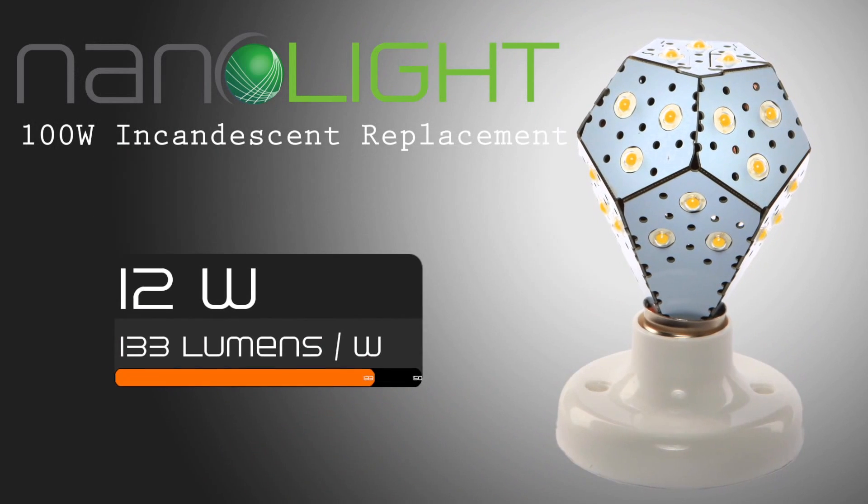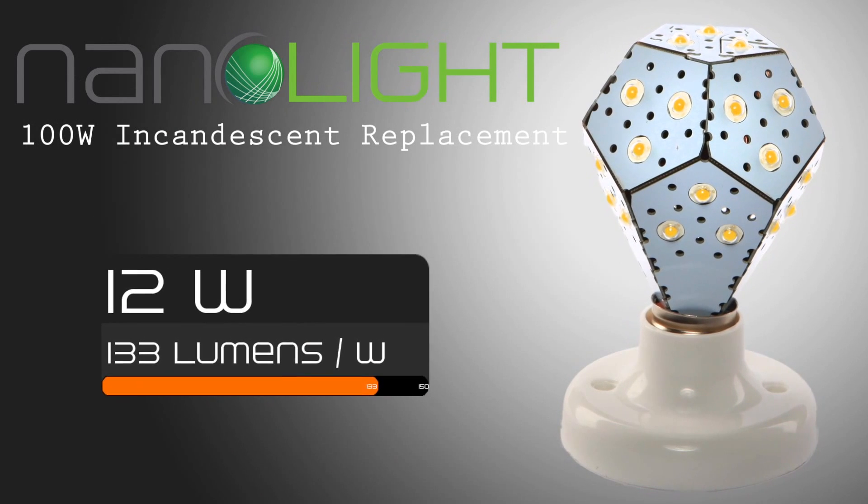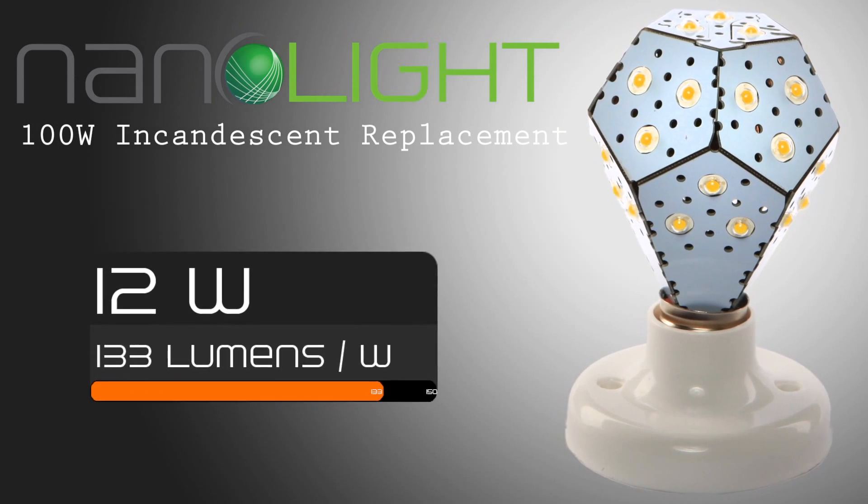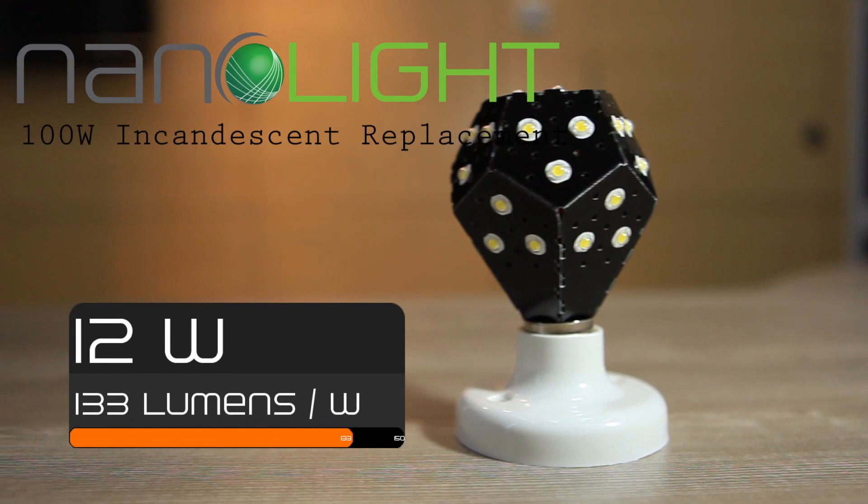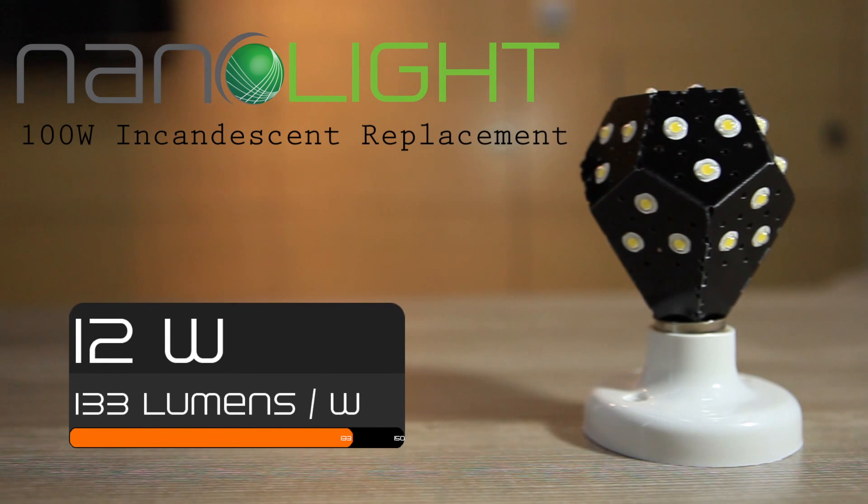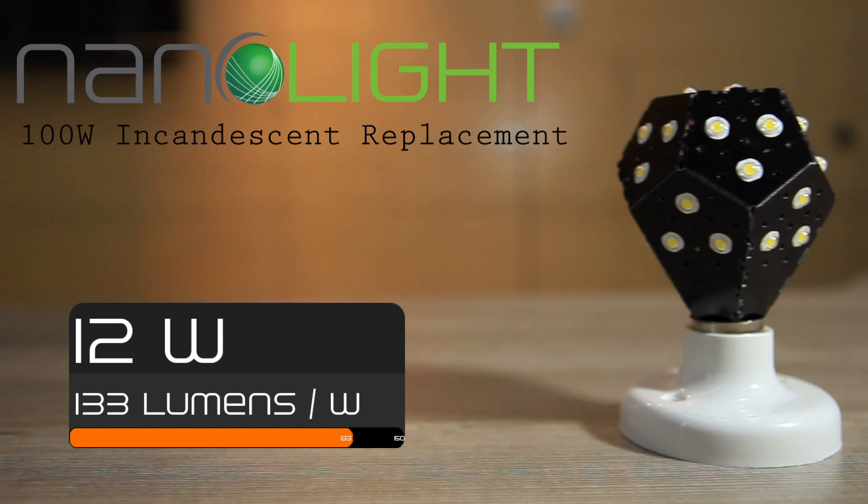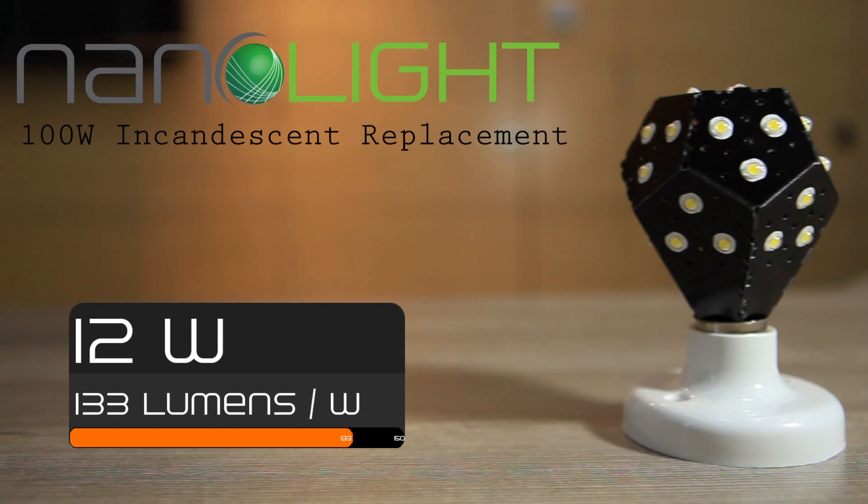The NanoLight is the first LED light bulb of its kind. The bulb slashes energy consumption much further by cutting it in half. Using only 12 watts of electricity, the NanoLight is able to generate 1,600 lumens. This is the equivalent to a true 100 watt incandescent light bulb.